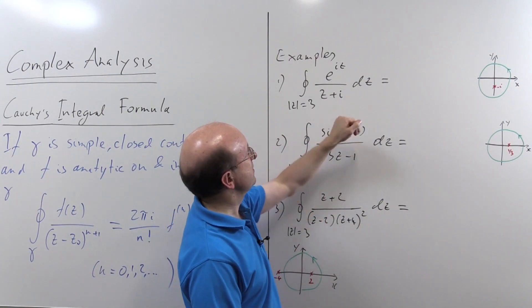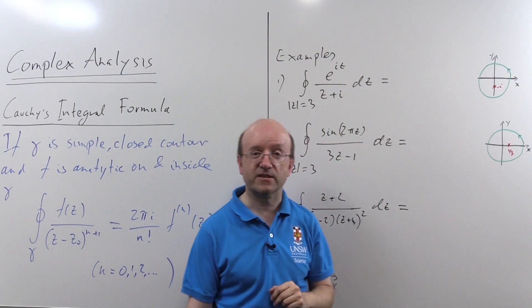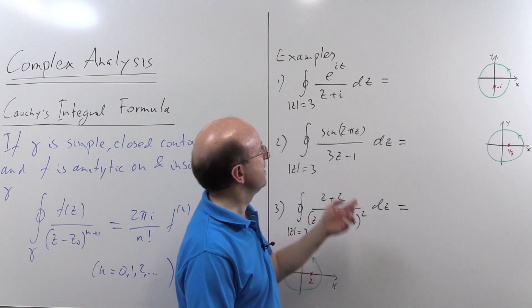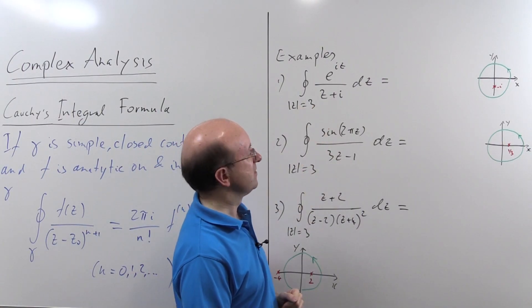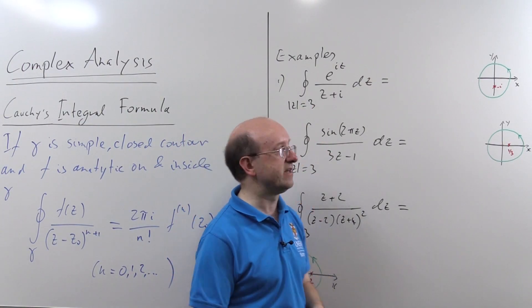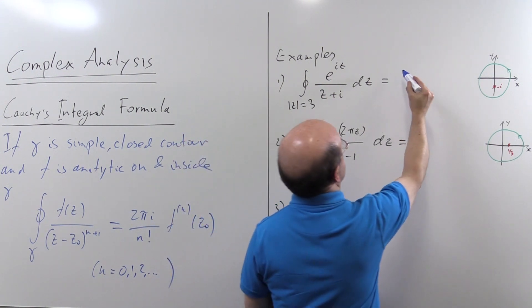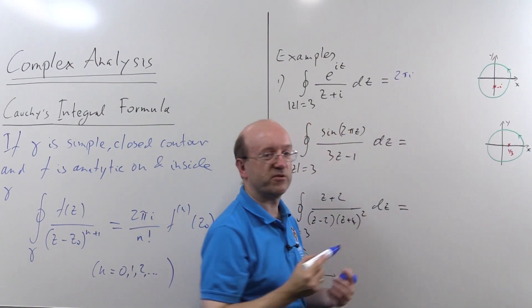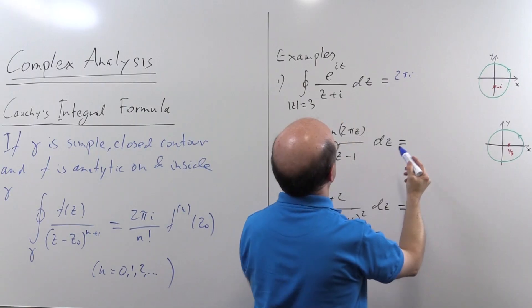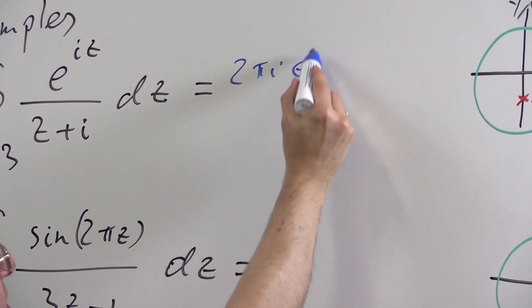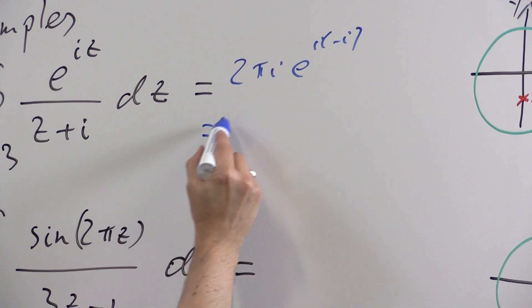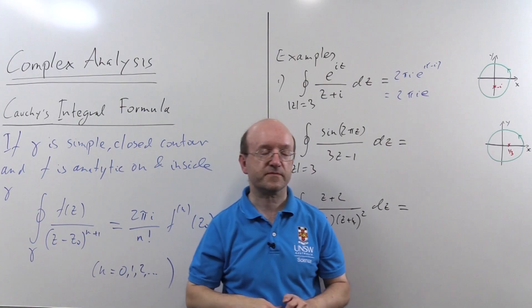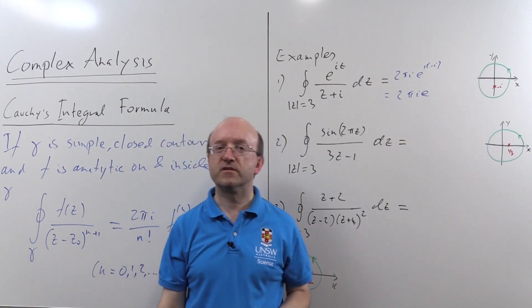So according to Cauchy's integral formula, as long as e to the iz is analytic on and inside gamma, well, it's analytic everywhere, so that's not a problem, then we just have to evaluate this function at z equals minus i. And multiply by 2 pi i, well, over 0 factorial technically, that's just 1, times the value of e to the i at minus i, which is 2 pi i e. That's our first very simple example.